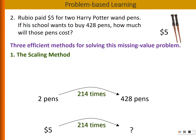So let's consider the answer will be 214 times 5. I think it's 1070, right?